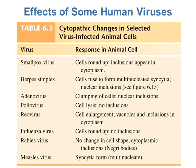For example, the smallpox virus causes the host cell to round up and inclusion bodies to appear. Poliovirus is released via cell lysis, so the host cell is actually killed when the poliovirus is released. There are also pictures showing different types of host cells and how they have changed due to viral infection.